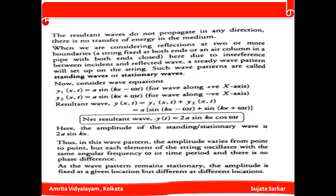When considering reflection at two or more boundaries, there is interference between the incident and reflected waves, which sets up a steady wave pattern on the string called standing waves or stationary waves. If y₁ = A sin(kx − ωt) and y₂ = A sin(kx + ωt), then y = y₁ + y₂ = A sin(kx − ωt) + A sin(kx + ωt), which results in y = 2A sin(kx) cos(ωt).